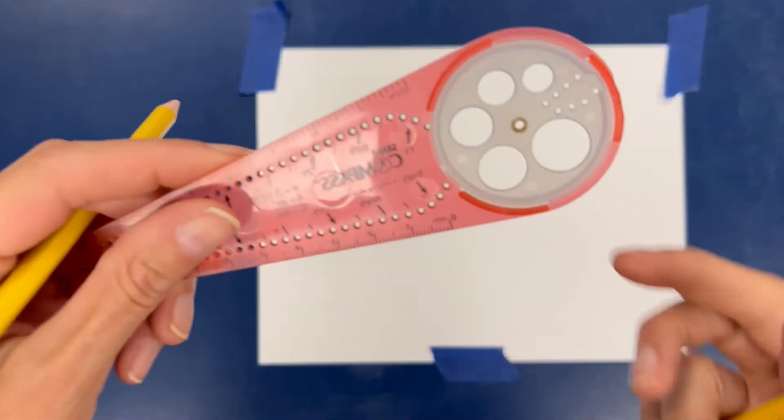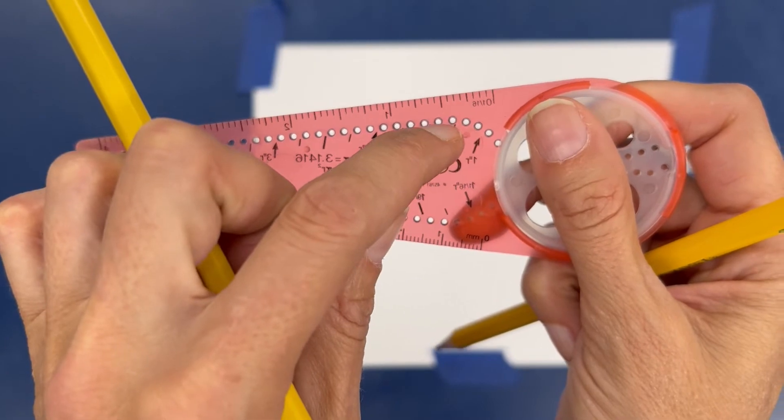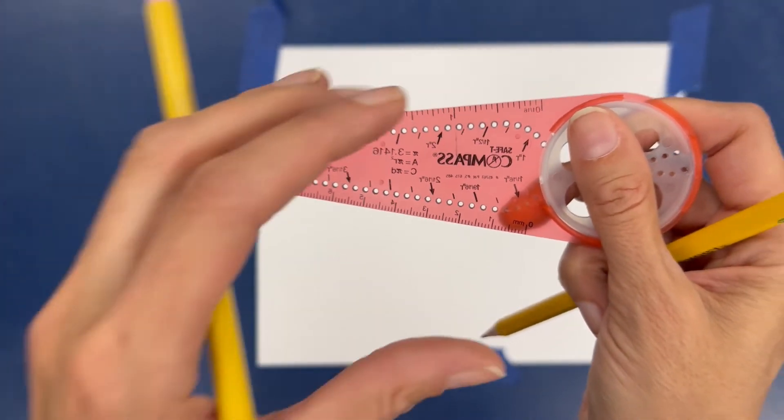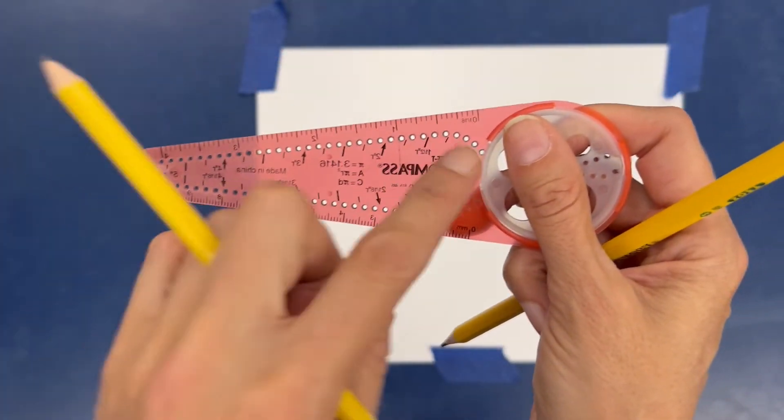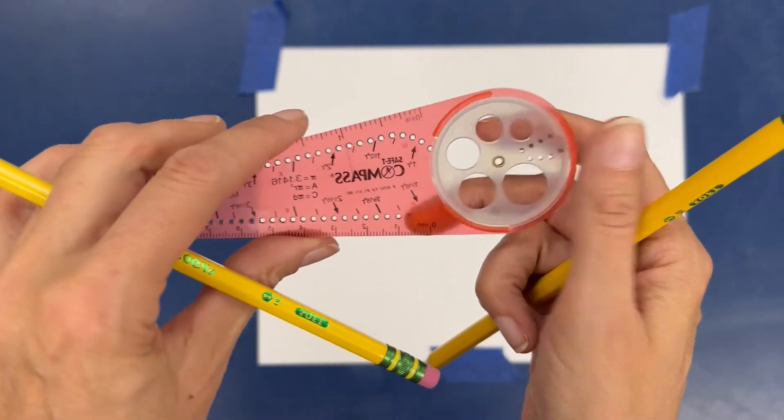With my other pencil I'm going to put it in one of these dots along the sides. I'm going to show you a little bit closer. See all these little tiny dots? Every single one of these allows us to make a circle that gradually gets bigger and bigger depending on how far away from the center you choose.